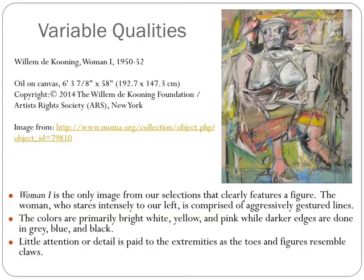Woman 1 by Willem de Kooning is the only image from our selections that clearly features an unmistakable figure. The woman, who stares intensely to our left, is comprised of aggressively gestured lines. Her mouth sneers in a toothy grin, and her wide eyes dominate not only her face, but also become the focal point of the painting. Proportions within the figure are drastically altered with large breasts, small forearms, and an undefined lap. The colors are primarily bright white, yellow, and pink, while the darker edges are depicted in gray, blue, and black. Little attention or detail is paid to the extremities, such as the toes and fingers, which resemble claws.